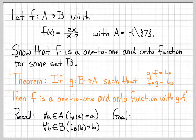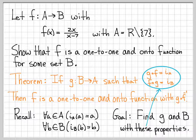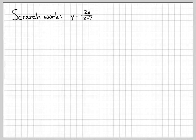So our goal, to establish that f is a one-to-one and onto function, is to find g and B with the required properties — specifically the circled properties. Let's do some scratch work to figure out a good guess for what this function g might be. Our function f(x) was 2x divided by x minus 7.